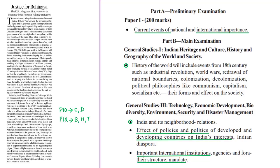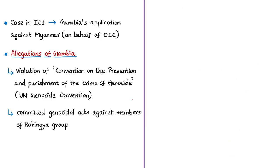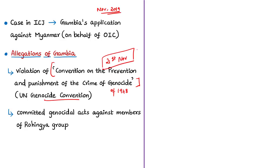This editorial is related to the recent ruling by the International Court of Justice on the Rohingya issue. In November 2019, Gambia filed an application on behalf of the Organisation of Islamic Cooperation against Myanmar in the ICJ concerning alleged violations of the Convention on the Prevention and Punishment of the Crime of Genocide of 1948 — the UN Genocide Convention. This issue was discussed in detail during the 21st November 2019 Hindu news analysis.